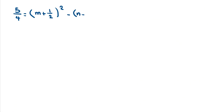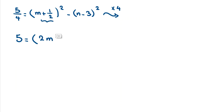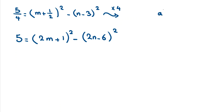Now if we multiply both sides by 4, the left hand side becomes 5. On the right hand side, multiplying inside the squares by 4 gives (2M + 1)² minus (2N - 6)².